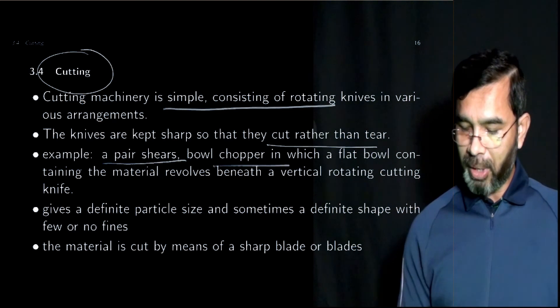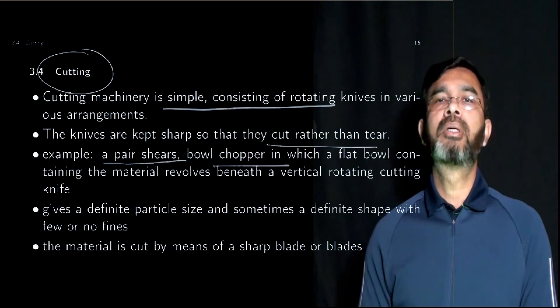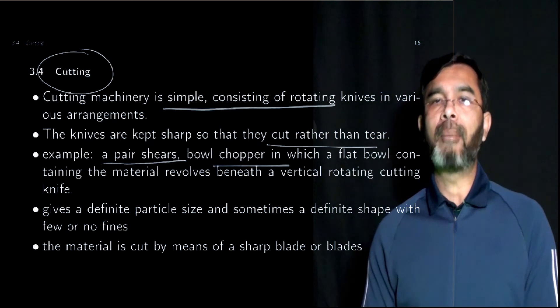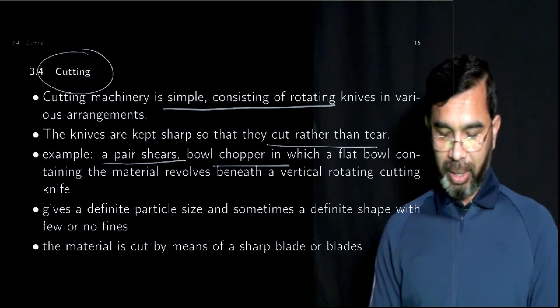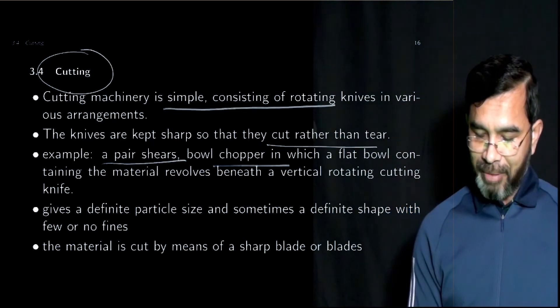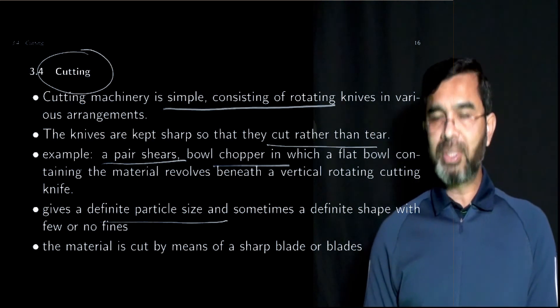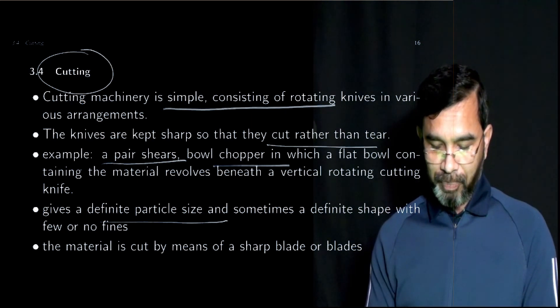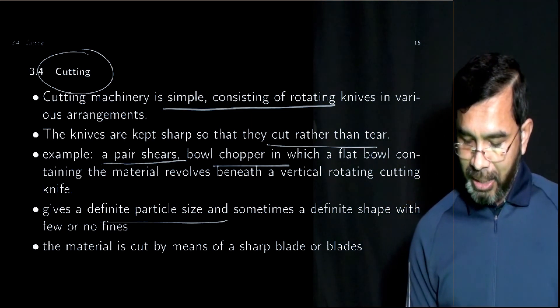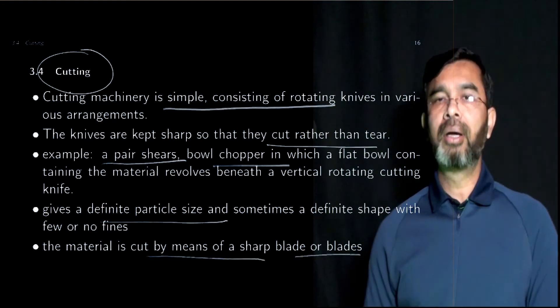A pair of shears, a bowl chopper - these are all examples of cutting forces applied in this machinery. This gives definite particle size and sometimes definite shape as well, with few or no fines. The material is cut by means of sharp blade or blades.